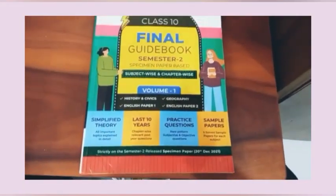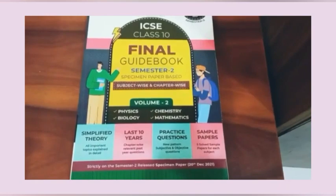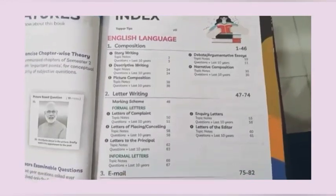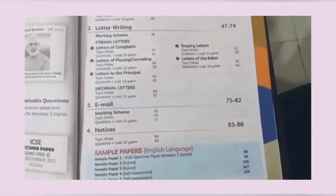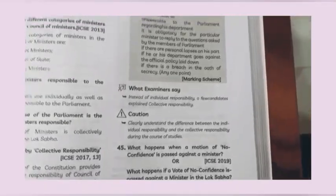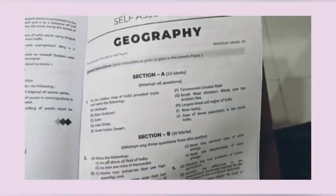Let me show you these amazing books from EduCart for ICSE 10th. This is available in two volumes — Volume 1 and Volume 2 — covering all subjects. This is the only book based on the semester 2 examination, objective plus subjective. From the index, you can see chapter notes with important points, summarized concepts, objective and subjective questions with answers, marking scheme, and examiner expectations. At the end, sample papers with solutions based on the board pattern are provided. Buy EduCart books — link is in the description.